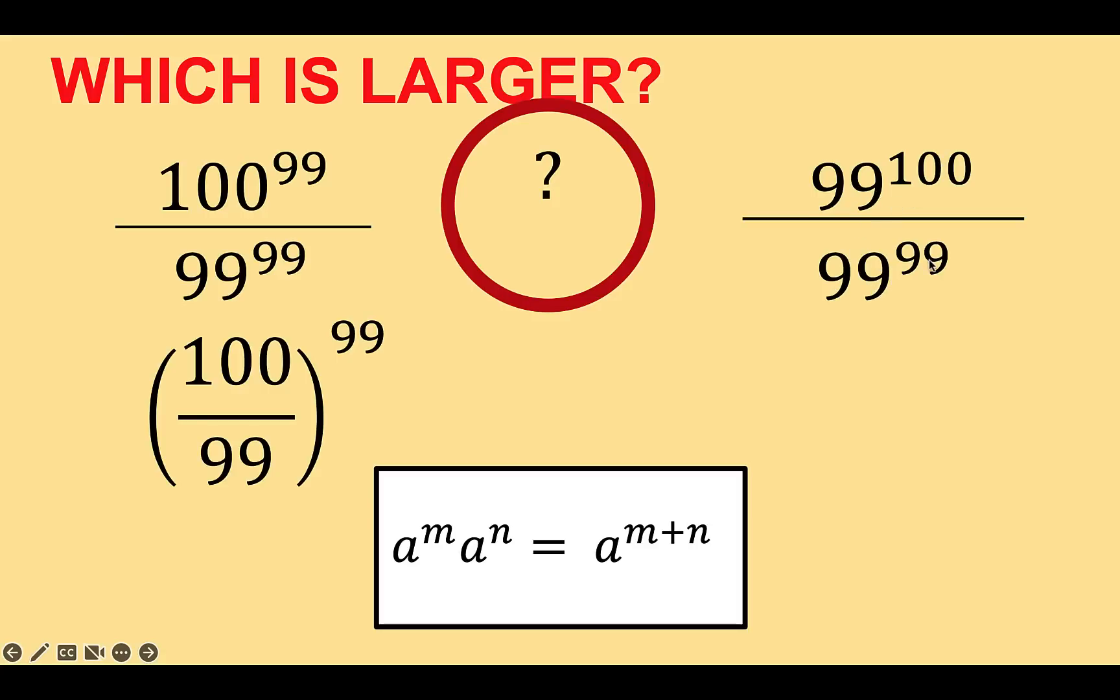We're going to use this because you notice that you have here 99 raised to 100 and the denominator is 99 raised to 99. If we can split this 100 into 99 plus 1, then we'll be able to simplify this right expression much better. So let's carry that out. First, we are going to split the exponent 100 to 99 plus 1.